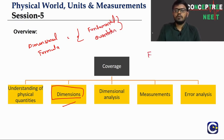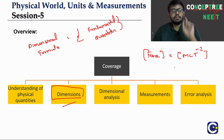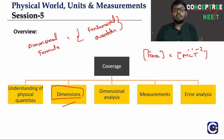For example, the dimensional formula of force is M L T power minus 2. The dependency on mass is to the power 1, dependency on length is to the power 1, and dependency on time is to the power minus 2. The power values — 1, 1, and minus 2 — are called the dimensions.